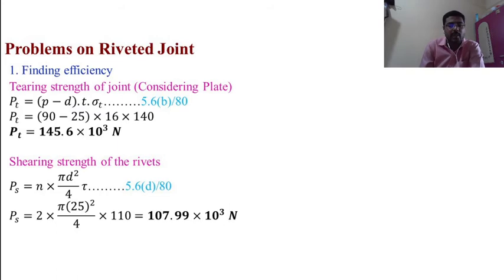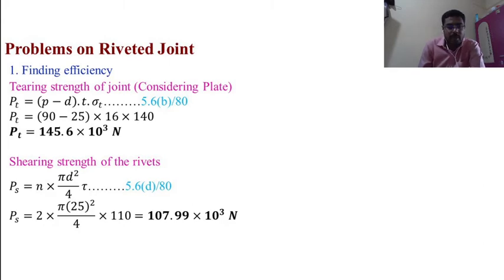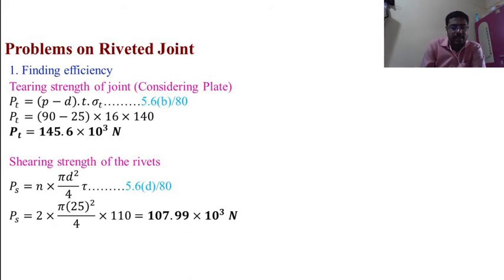Shearing strength of the rivets: PS = N × (π/4) × d² × τ — equation 5.6D, page 80. PS = 2 × (π/4) × 25² × 110 = 107.99 × 10³ N.